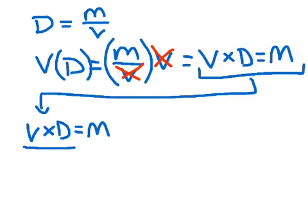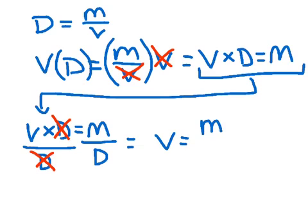So if I divide both sides by density, clearly we see that density will cancel out here, and what I'm left with is volume is equal to mass over density.